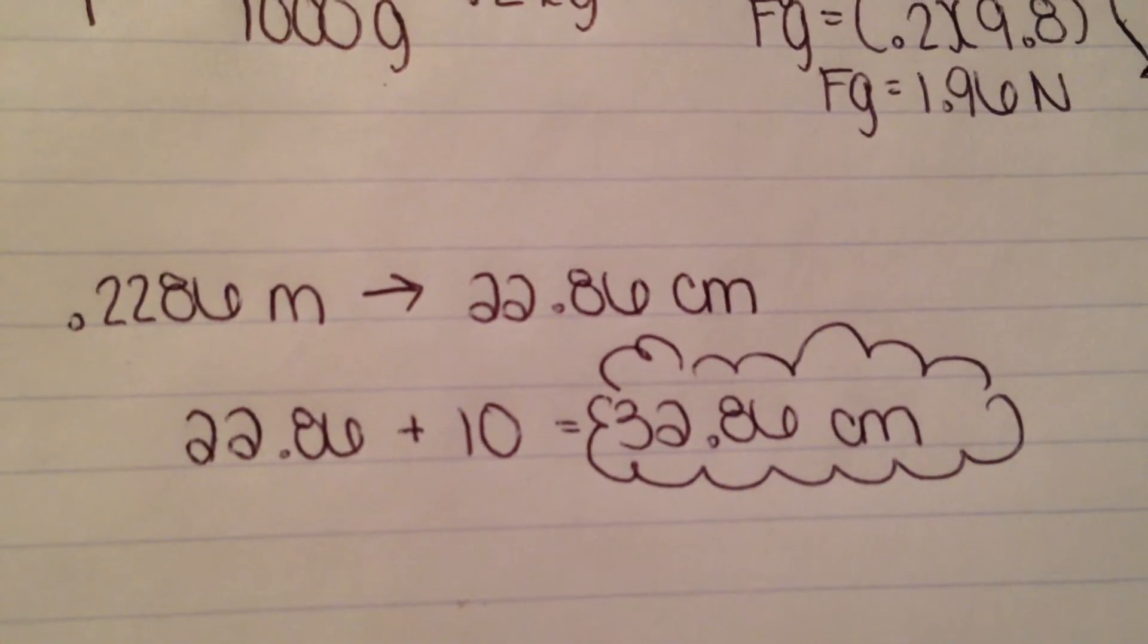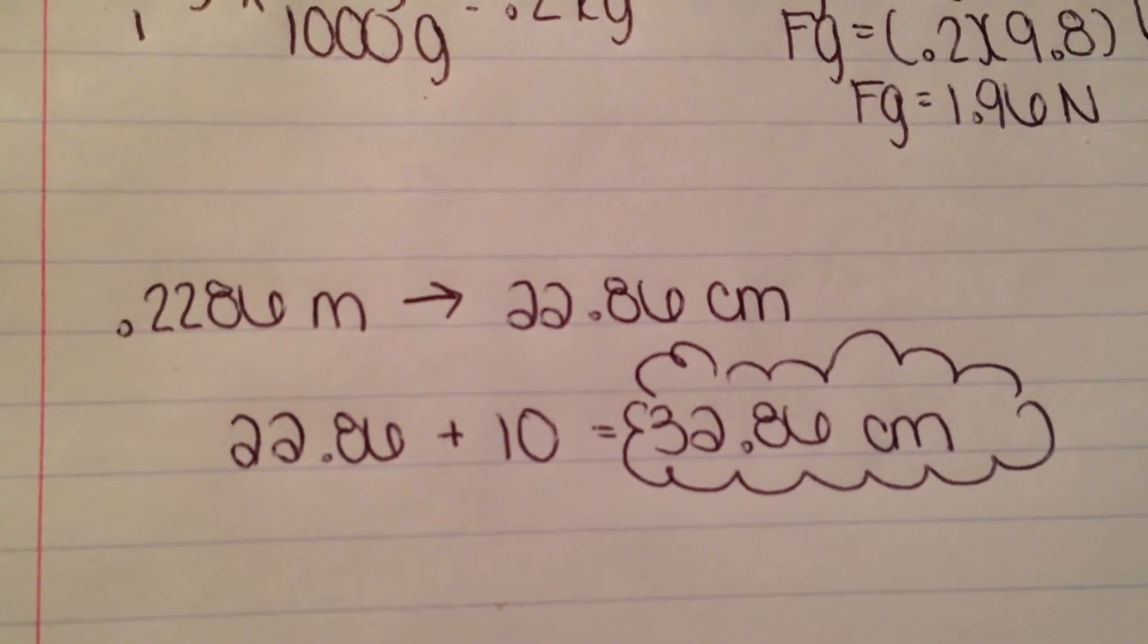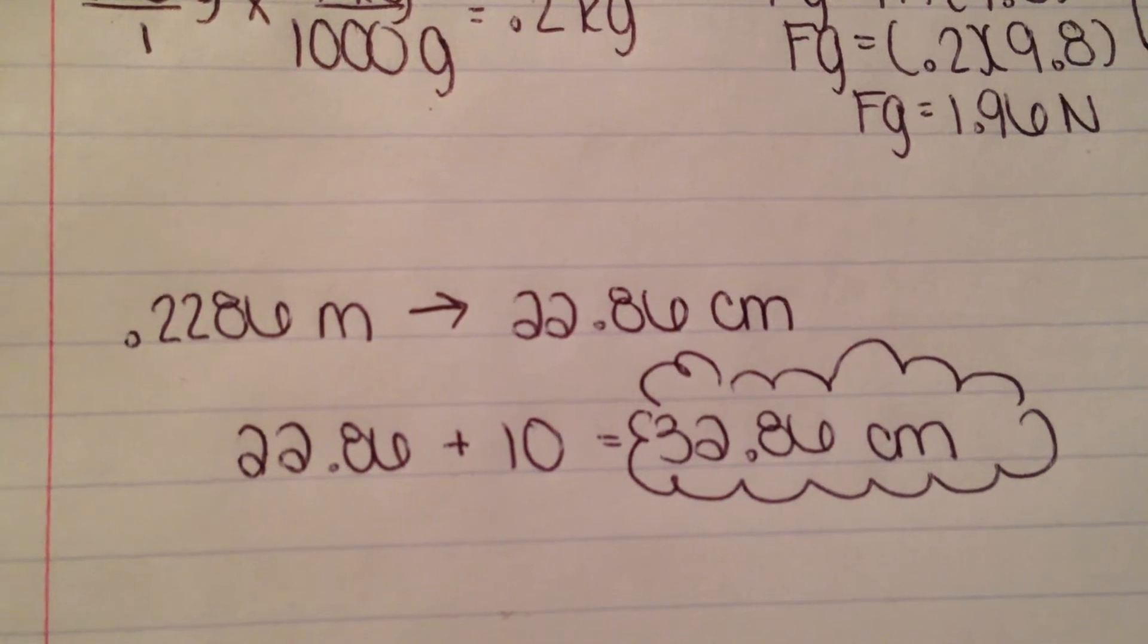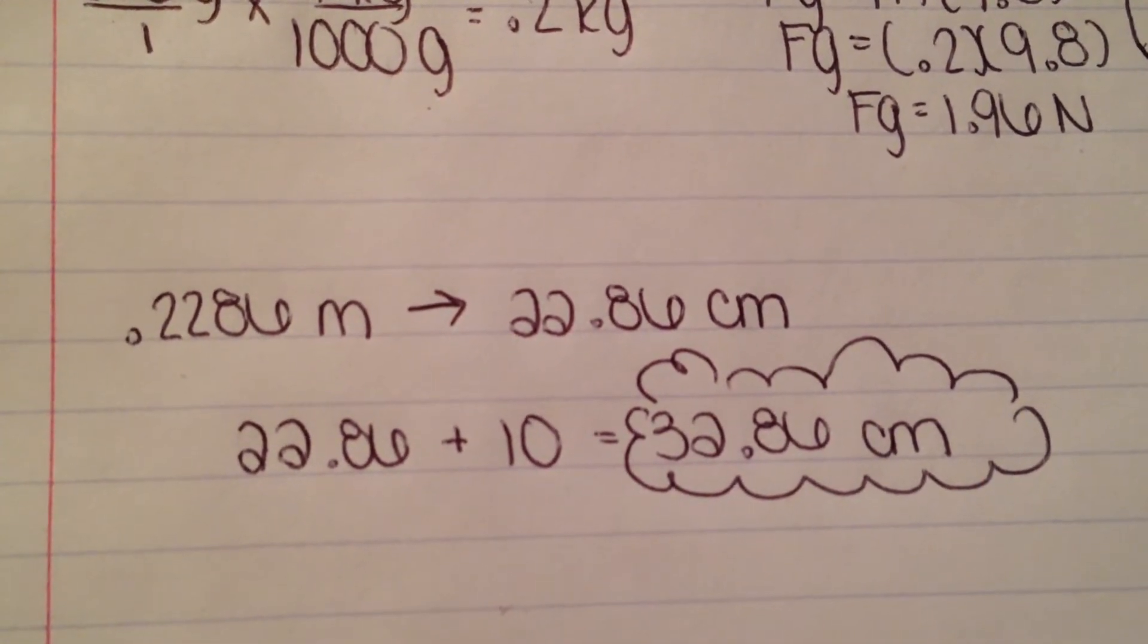Since we need to find where to put the support to balance the meter stick, we need to go back to working in centimeters, since it's more accurate. So, we take the 0.2286 meters and convert it into centimeters, which should be 22.86 centimeters.